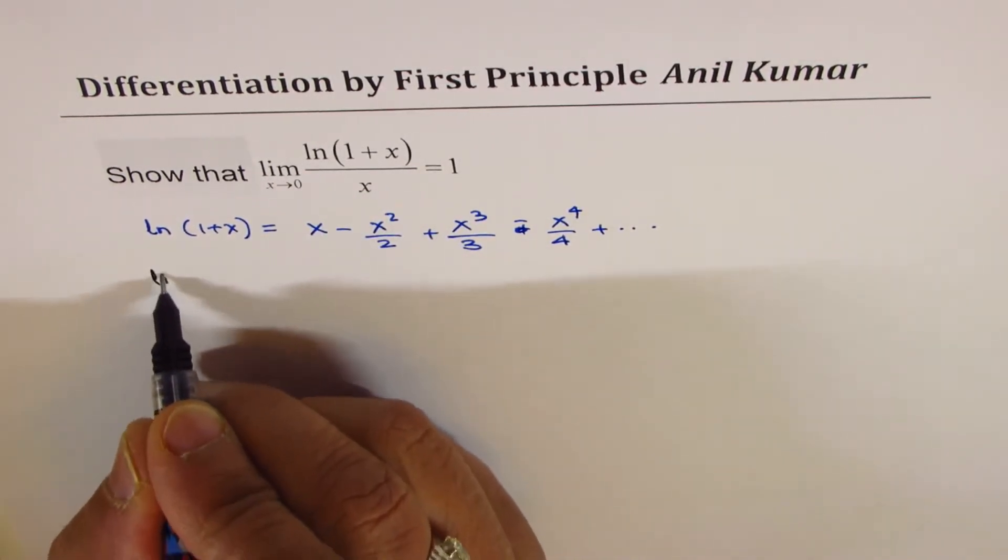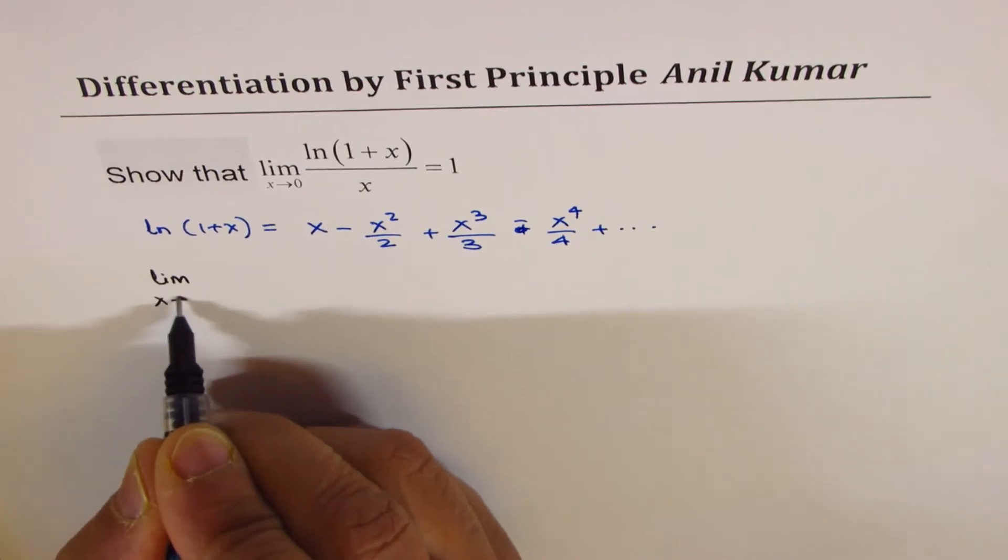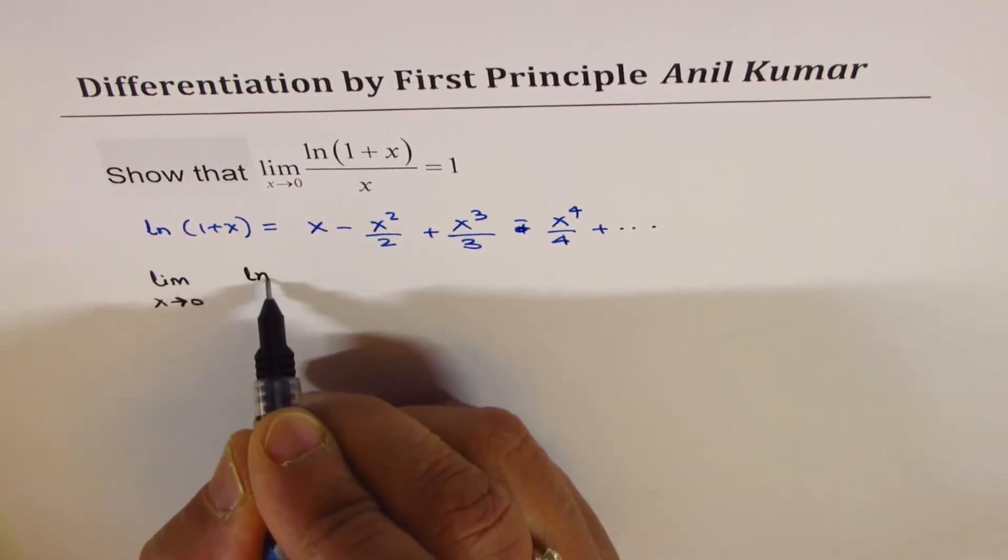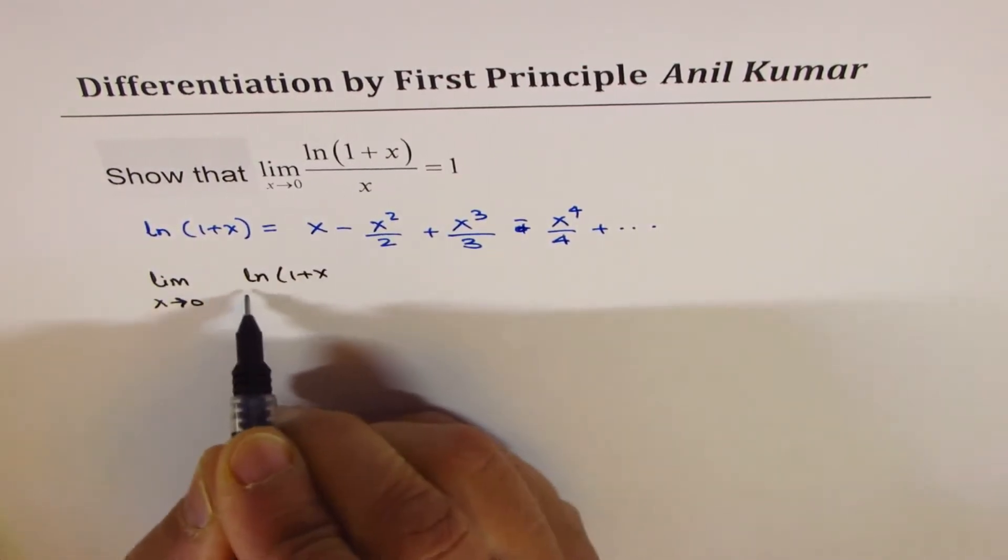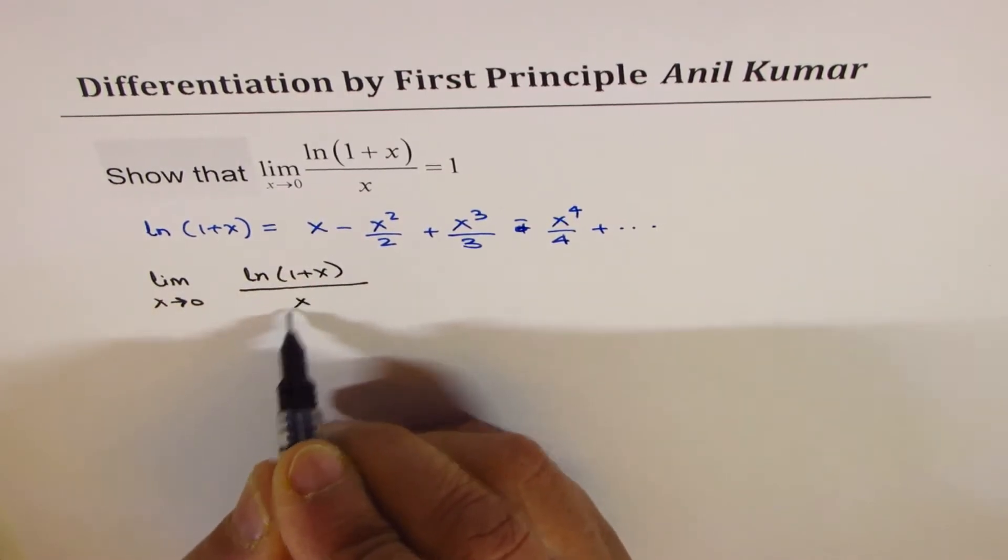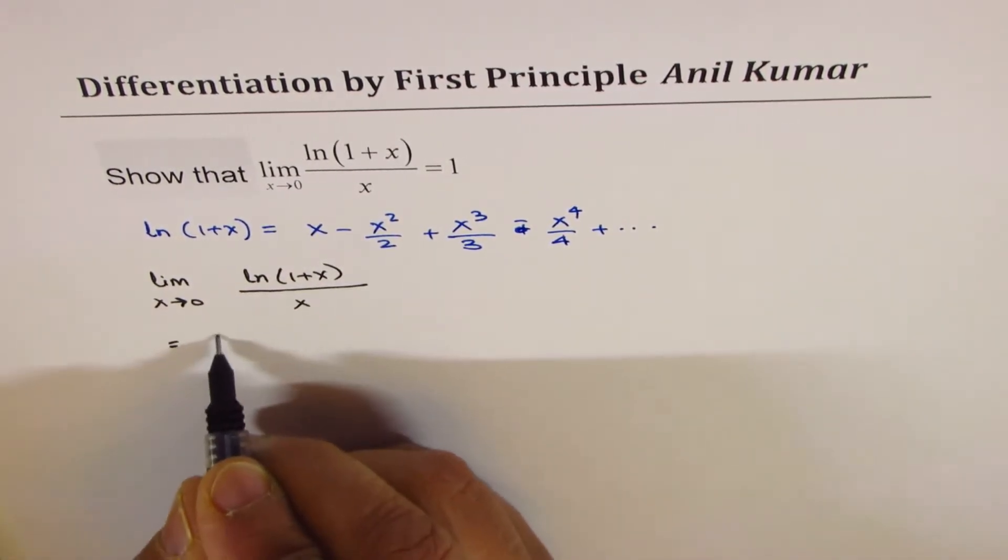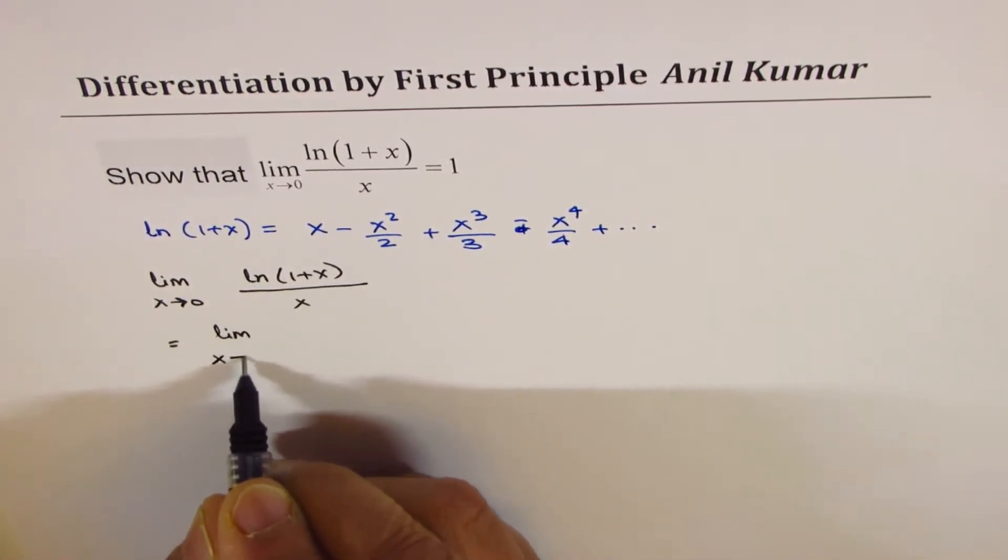So now let us find out the limit when x approaches 0 for ln(1+x) over x. Now I could write this as limit x approaches 0.